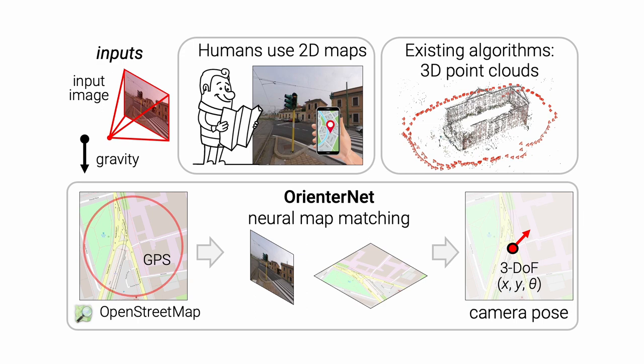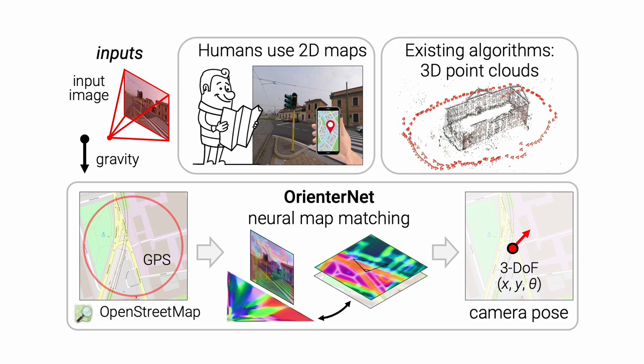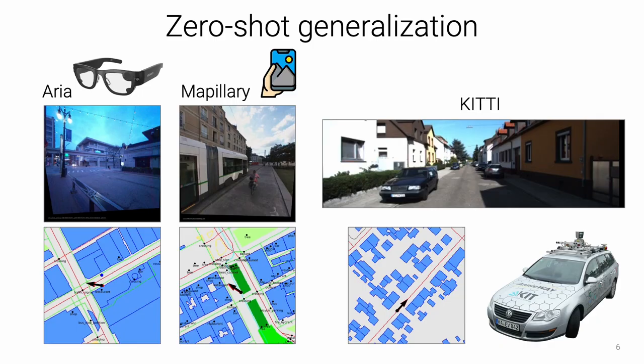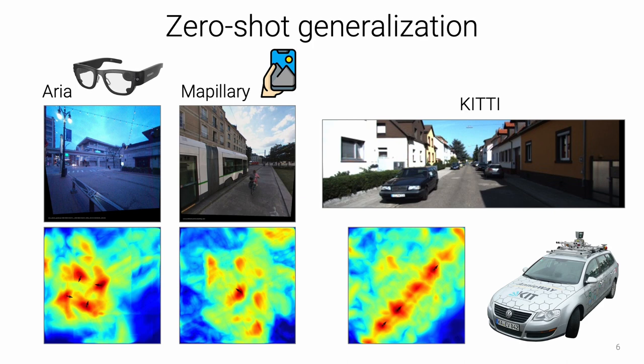Our approach estimates both position and orientation by matching a neural bird's eye view with a neural map. It learns end-to-end to perform semantic matching with a wide range of map elements. OrientInternet generalizes to new datasets captured by augmented reality devices or robots without retraining, and yields large improvements over GPS and satellite maps.